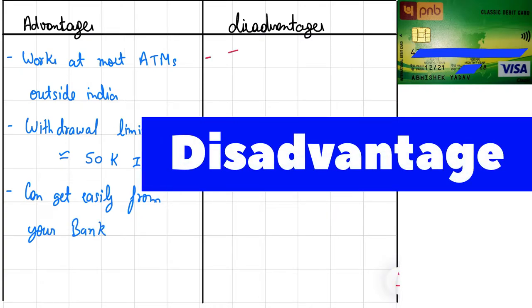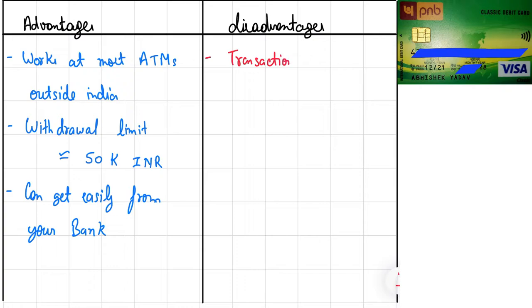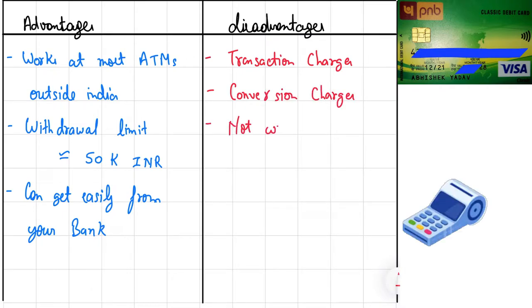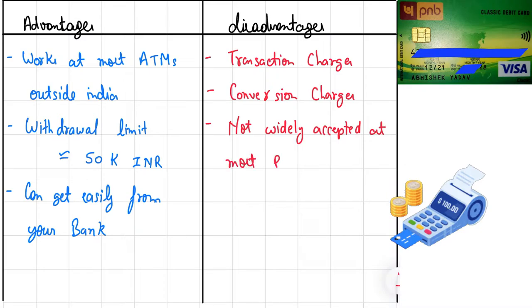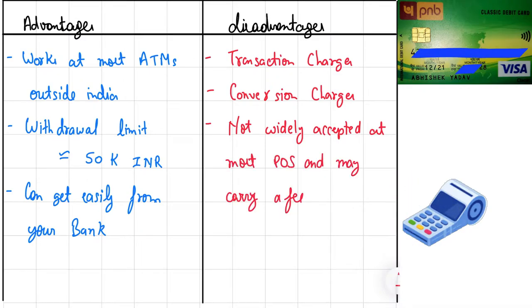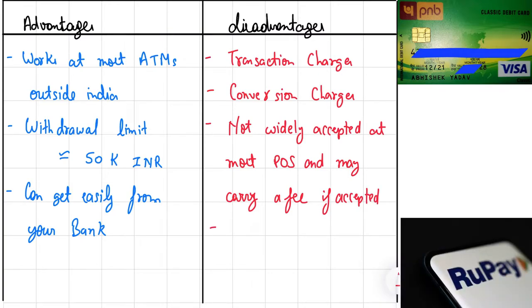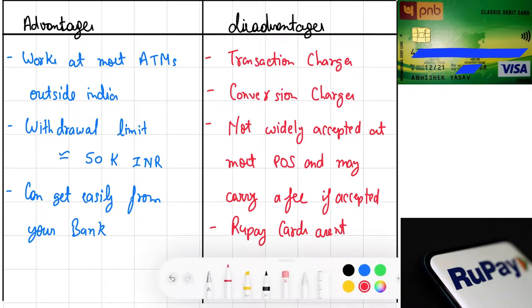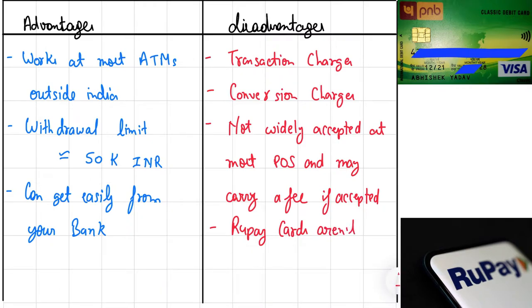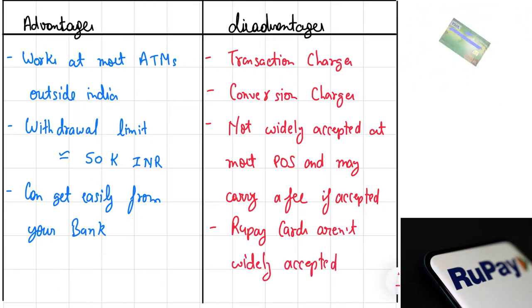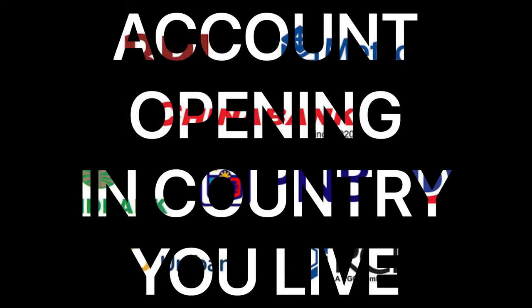Moving on to the disadvantages: most banks charge huge fees for international transactions in the form of conversion charges, except for a few banks like Punjab National Bank and Indian Bank. They are not widely accepted at most point-of-sale terminals, and if accepted, they carry large transaction fees. Rupee cards are not widely accepted and have a comparatively low withdrawal limit of around 25,000 INR per transaction.